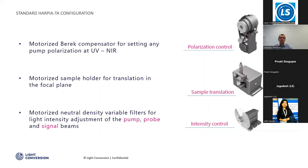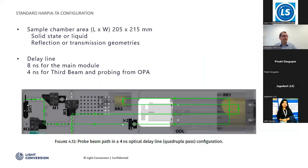Harpia also includes fully automated polarization control, so you can control the polarization of your pump beam with a Babinet–Soleil compensator. It also has an automated sample translation stage, and you can control the intensity of the pump, probe, and signal to ensure smooth measurements. The sample area is around 20 by 20 centimeters. You can add solid-state or liquid samples in transmission or reflection geometries. The delay line is mechanical with two retro-reflectors, allowing you to reach up to eight nanoseconds.